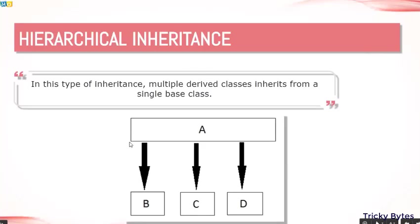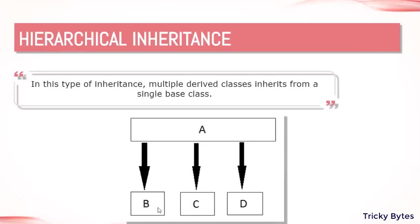In simple terms, we have one single base class A, and A has been derived by more than one class. Like a grandfather with three sons. B, C, and D all get the properties of A. So B has all the properties of A, C also has all the properties of A, and likewise D also has all the properties of A. All three sub classes get all the properties of the base class A.